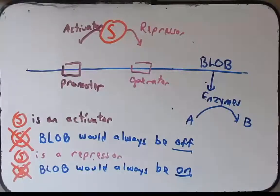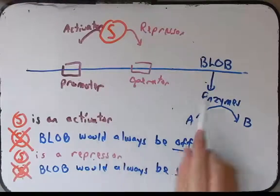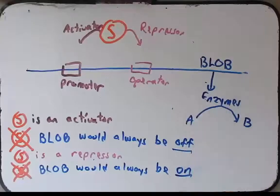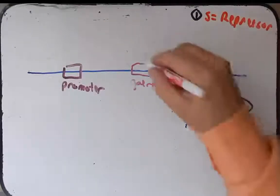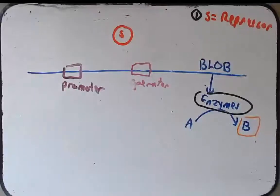So in the problem, we're told that if gene S is mutated, the enzymes are synthesized in the presence and the absence of compound B. We're told if we mutate S, that this operon is always on. So from that, we can conclude that S is a repressor. So we've successfully answered the first part of the problem. S is a repressor.